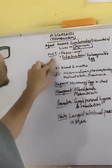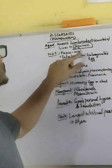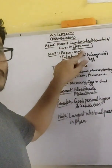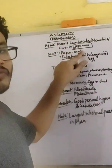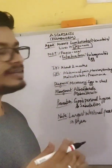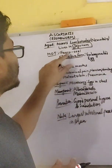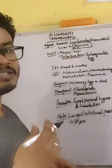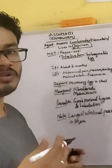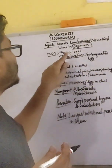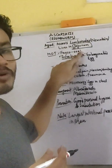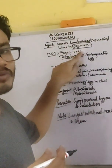The mode of transmission is the feco-oral route — with the help of our mouth or hand. If the hand is infected with stool, the feco-oral route will be the main mode of transmission.